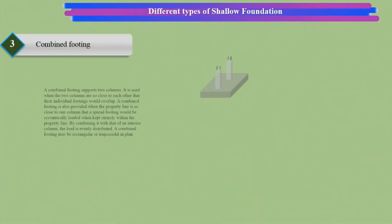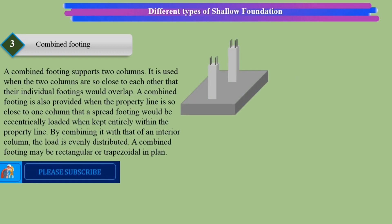Combined footing: A combined footing supports two columns. It is used when the two columns are so close to each other that their individual footings would overlap.